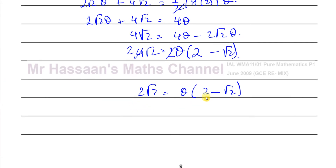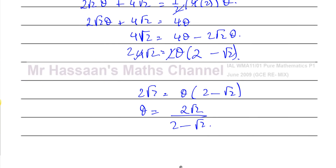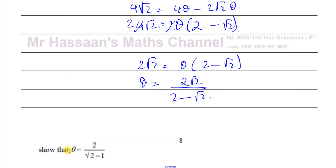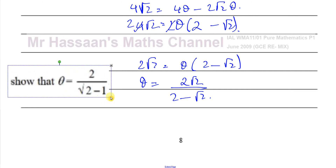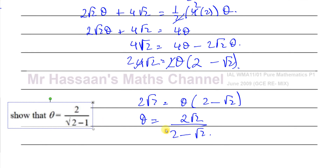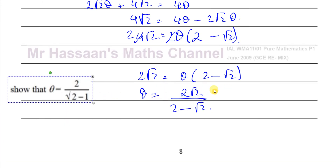Dividing both sides by (2 − √2) gives θ = 2√2/(2 − √2). Now, what we have to show looks entirely different — it's 2/(√2 − 1). This is odd because normally they ask you to rationalize the denominator, but here the denominator is irrational and the numerator is rational, so it looks like they've rationalized the numerator instead. Maybe it's testing whether you can do this without a calculator.